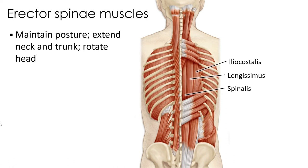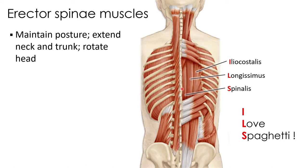The erector spinae muscles help to maintain posture, extend the neck and trunk, and rotate the head. They're organized into three groups that run parallel with the vertebral column: the iliocostalis is the most lateral group, the longissimus is the middle group, and the spinalis is the most medial group, inserting into the spinous processes of the vertebrae. A mnemonic to remember these three groups is 'I love spaghetti' — ILS — and the S is closest to the spine because it's called the spinalis.